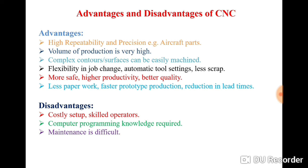The next advantage is that CNC machines are more safe. You write the manual part program, enter it into the CNC machine, and everything is done by the machine — so it is safer compared to a conventional machine where the worker is close to the workpiece and cutting tool, creating chances of accidents. CNC machines also have higher productivity, which is the ratio of output to input.